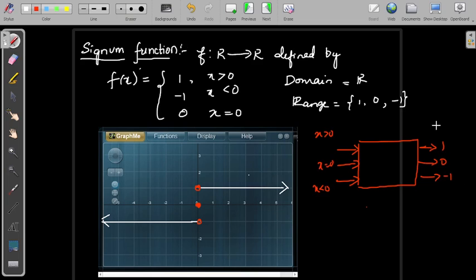Therefore, there are only three possible outputs for this function: 1, 0, and minus 1. Except these outputs, no other outputs are possible.